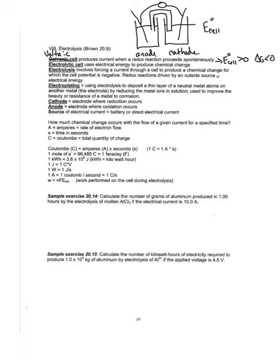An electrolytic cell is exactly the opposite. The cell voltage is less than zero — it's a negative value — and therefore it is not a spontaneous cell, giving a positive ΔG value. That means if you hooked it up, nothing would happen; the reaction does not naturally form products. So in an electrolytic cell, instead of a voltmeter, what you're going to see in the diagram is a battery. We need something to drive the reaction since it's not spontaneous — an external energy source like a battery.